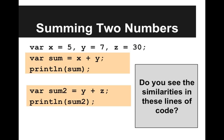We introduced functions with parameters last time, and we're going to continue to explain it with a different example. In this code, I'm summing several numbers. I declare variable x equal to 5, y equal to 7, and z equal to 30.